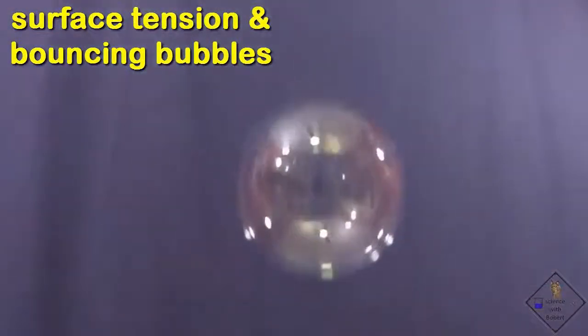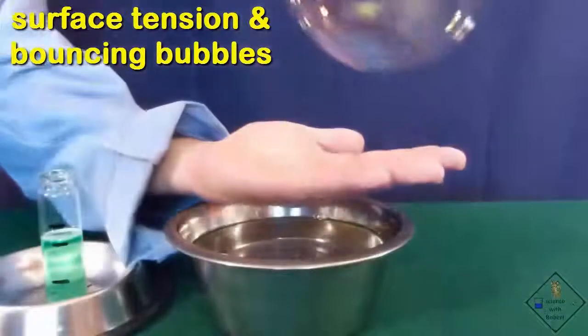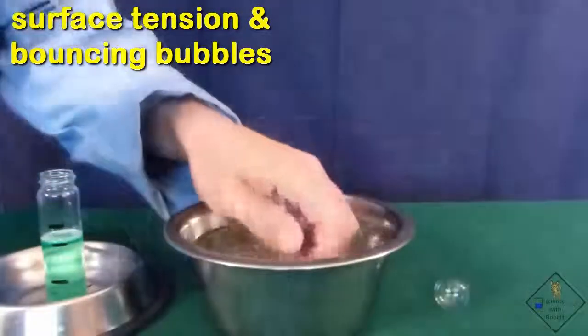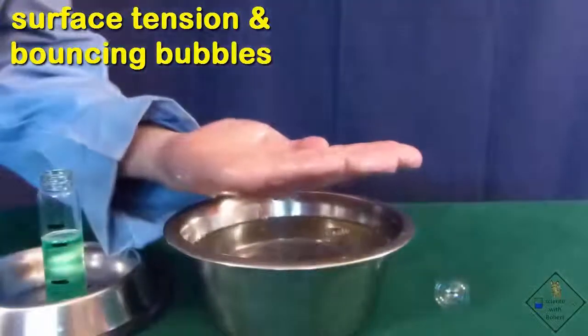Floating bubbles in the air pop when the water in the thin film of the bubble evaporates. When a bubble touches a dry hand, it immediately pops. But when the hand is wet with water, bubbles can be caught.